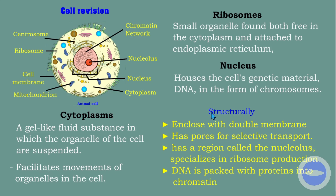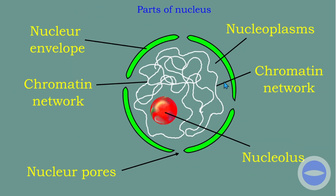Let me show you the structure of a nucleus. This is the structure of a nucleus. The double membrane is called the nuclear envelope — it has an inner membrane and an outer membrane. There is also a pore which we call the nucleopore. The nucleopore is where ribosomes and mRNA exit the nucleus — it's like a gate where things go in or come out.